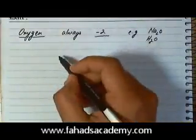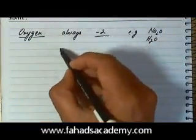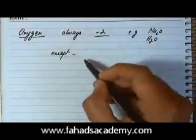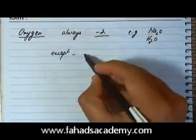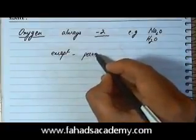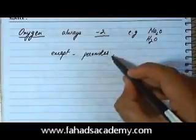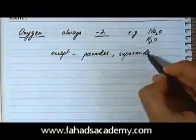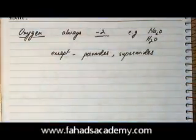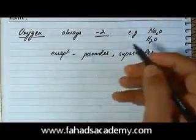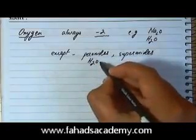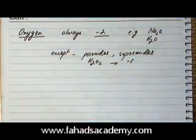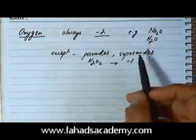There are a few exceptions to the minus two rule for oxygen. One exception is peroxides and superoxides, in which oxygen has a different oxidation state. For example, in H₂O₂, oxygen has an oxidation state of minus one.